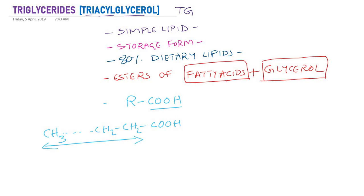Some fatty acids may contain 16 carbons and we call that palmitic acid. If they contain 18 carbons, we call it stearic acid, and so on. The general structure of fatty acids is the same — they contain a hydrocarbon side chain and a carboxyl group, so we represent fatty acids as RCOOH.